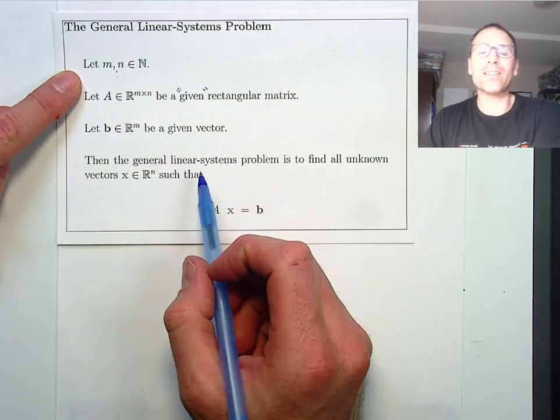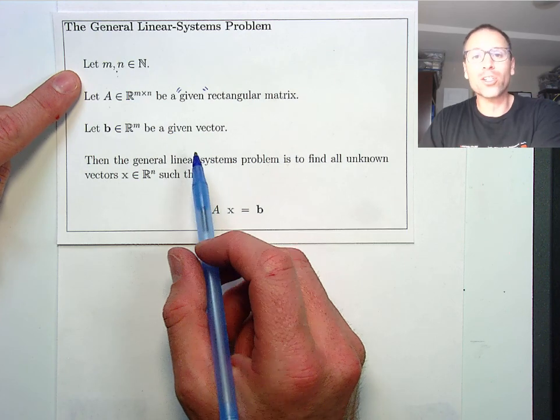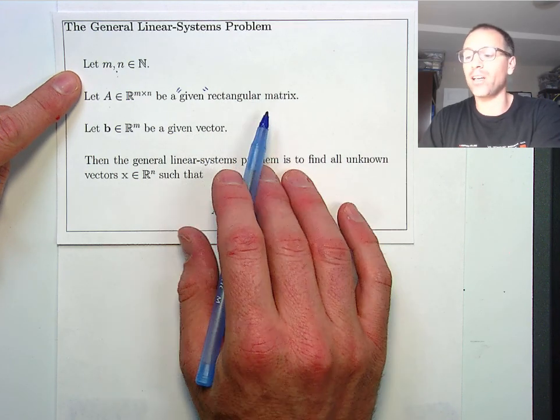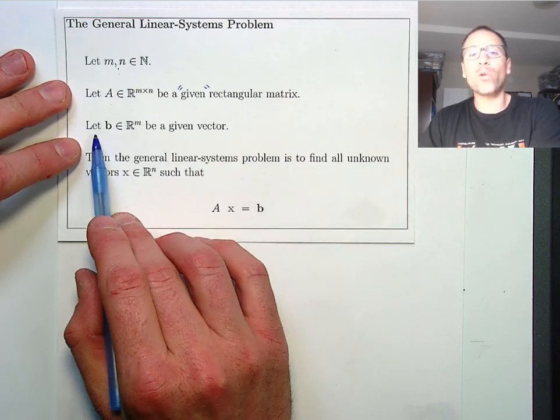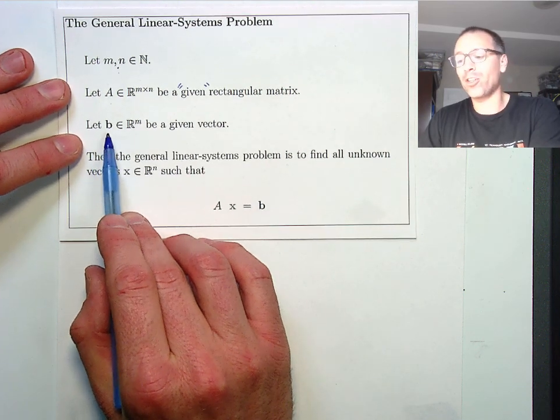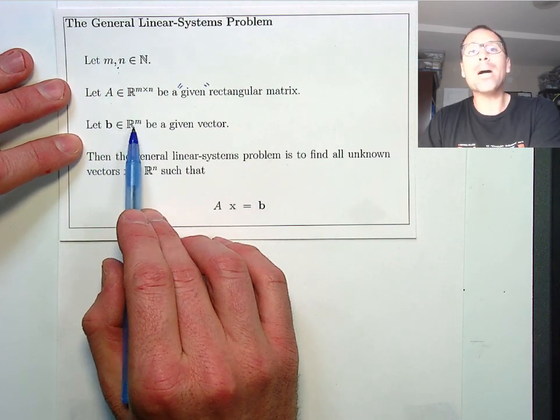We suppose that A is an m row and n column rectangular matrix that is given. Given means we spent days, months, or years constructing it from a real-world modeling context. Similarly, we are given a vector b that has m rows.